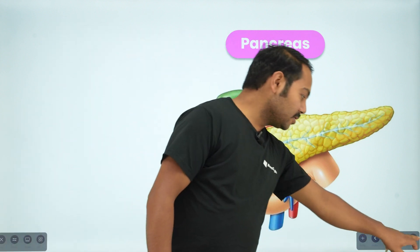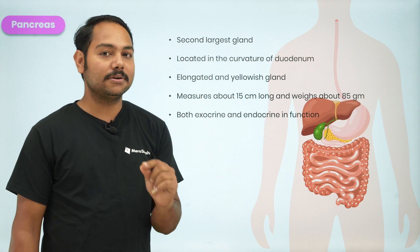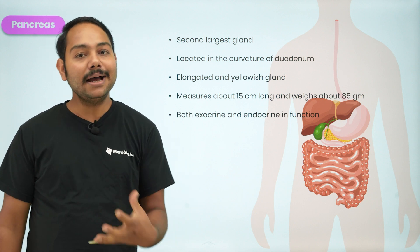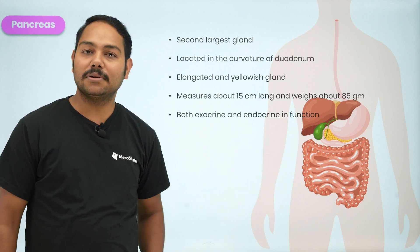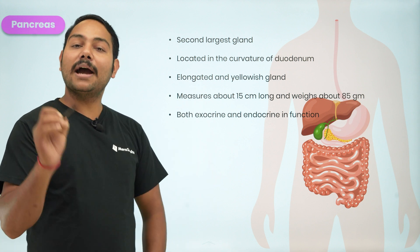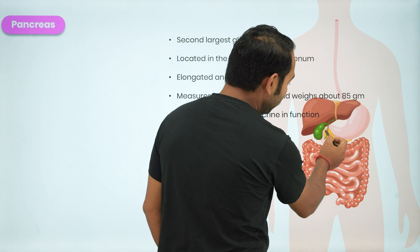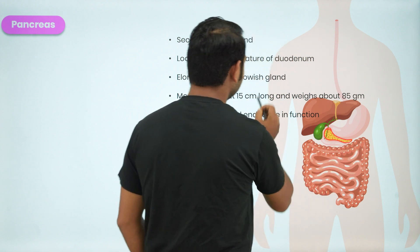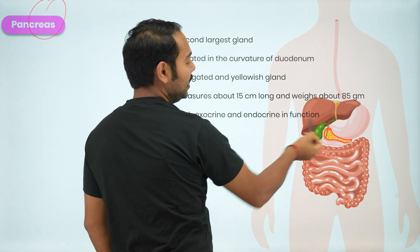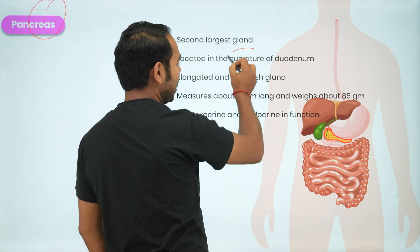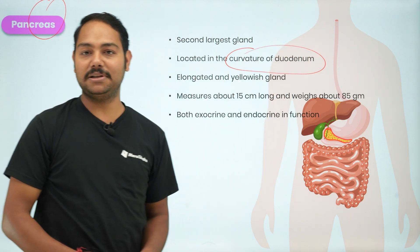The pancreas is a large gland in the human system. Located in the curvature of the duodenum — the yellow structure you can see here is the pancreas. The duodenum is located in the curvature of the pancreas. This is an elongated lobular gland.